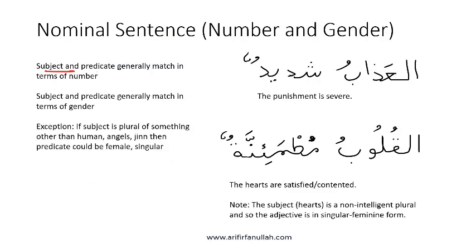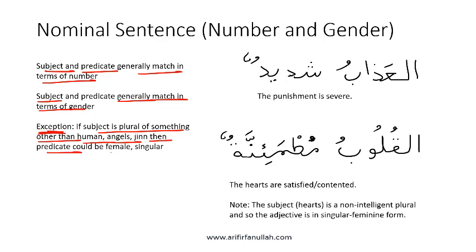The subject and predicate generally match in terms of number, so typically if the subject is singular, the predicate will also be singular. The subject and predicate generally match in terms of gender, but there is an important exception: if the subject is the plural of something other than human, angels, or Jinn — in other words, the subject is the plural of a non-intelligent entity — then the predicate could be female singular. We saw this earlier with Murakkab Tausifi and we see that again here.